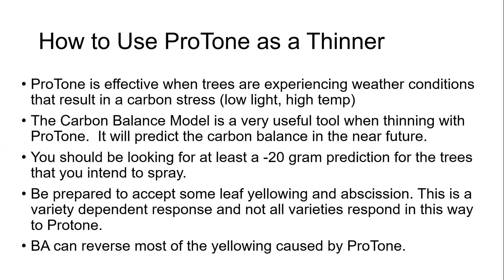Proton is effective when trees are experiencing weather conditions that result in carbon stress — specifically low light and high temperature. The carbon balance model is a very useful tool when thinning with Proton; you're looking for at least minus 20 grams of carbohydrate for that tree on the day you intend to spray. Be prepared to accept some leaf yellowing and leaf abscission — this is a variety-dependent response and not all varieties respond this way.